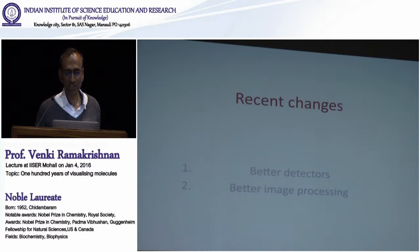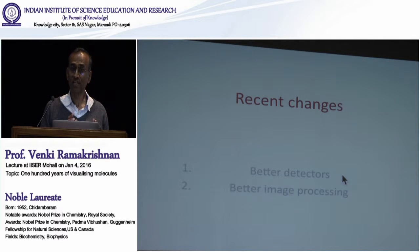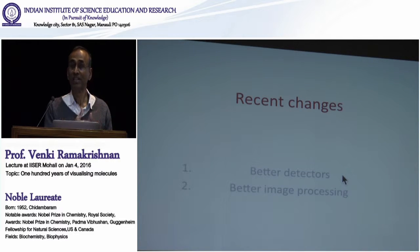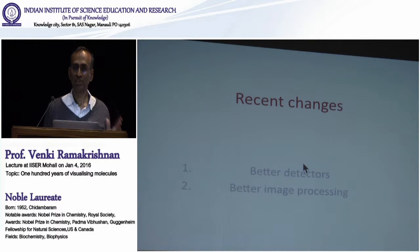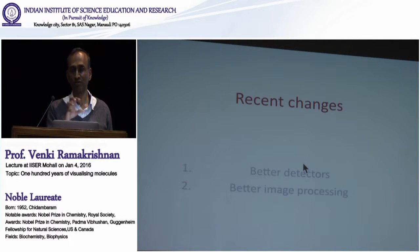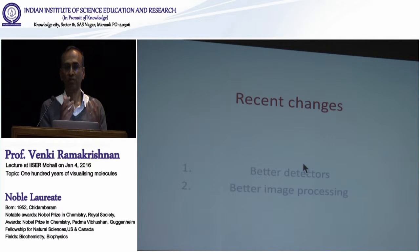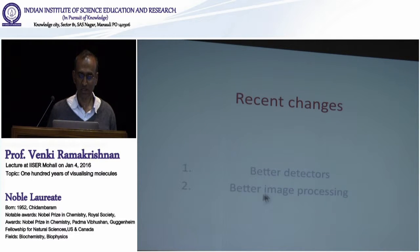Two things have changed recently. One is that there are better electron detectors. This means you don't have to expose as much, so you have less radiation damage. For the same amount of radiation damage, you get much better signal-to-noise. These detectors are more sensitive than film, and they're also much faster, so they can compensate for the movement of objects when electrons hit them. As soon as electrons hit a sample, the particles start to move because they get ionized and experience local electric fields.